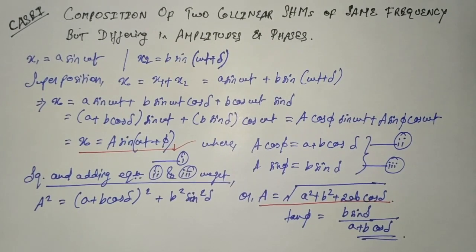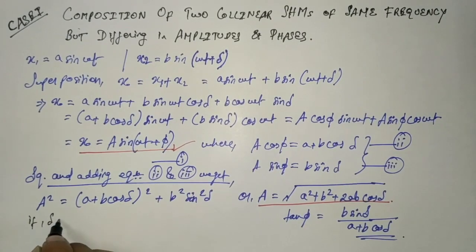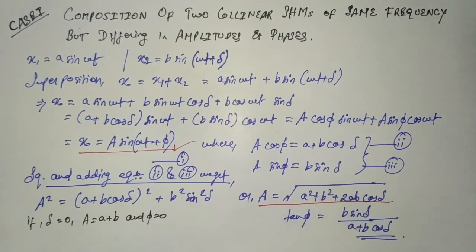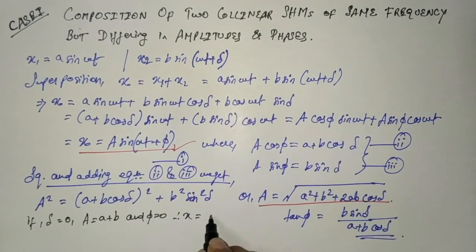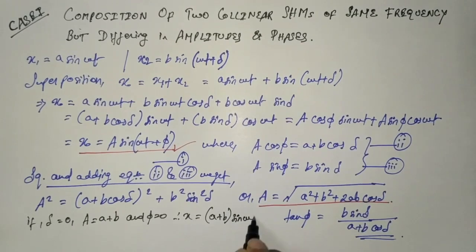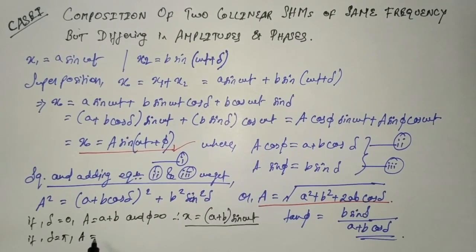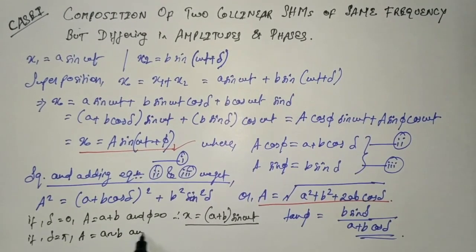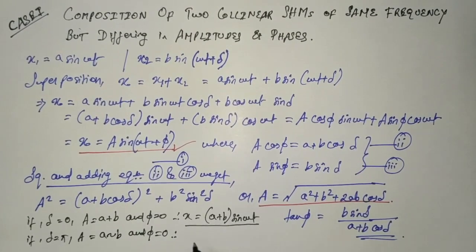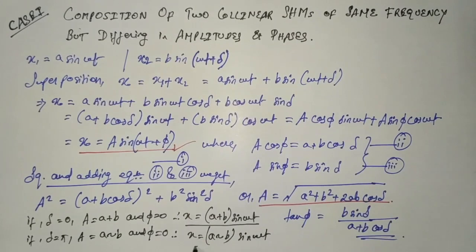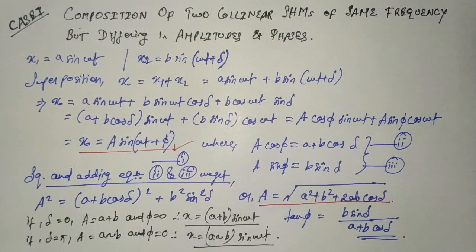Special cases: when δ = 0, A = a + b and φ = 0, so x = (a + b) sin(ωt). When δ = π, A = |a − b| and φ = 0, so x = (a − b) sin(ωt). These are the special cases of this condition.